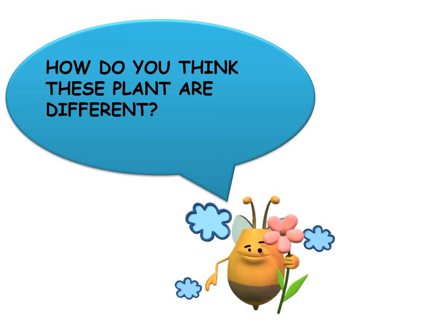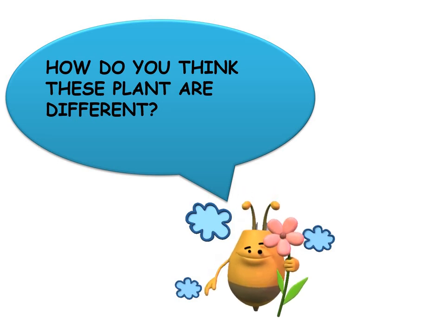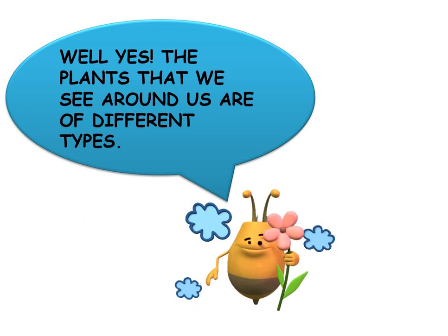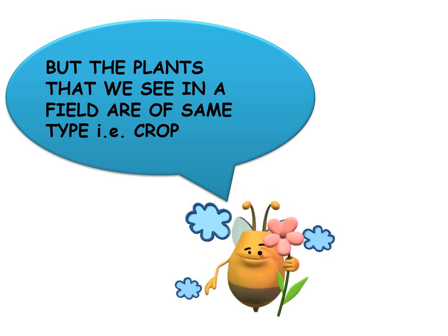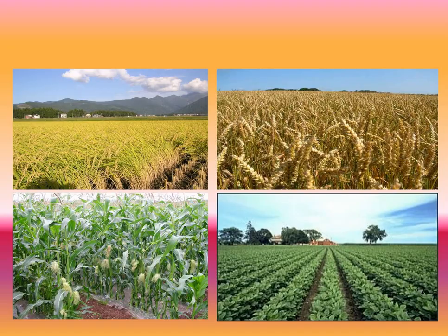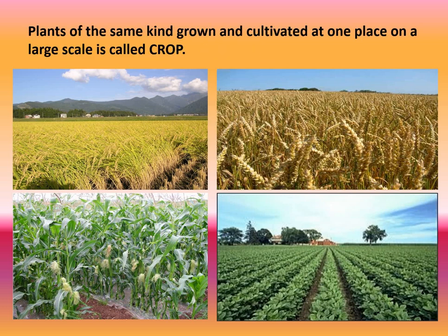Is there any difference between plants of a garden and plants of a farmer's field? The plants that we see in the garden are of different types, but the plants that we see in a field are of the same type, which is known as a crop. When plants of the same kind are grown and cultivated at one place on a large scale, it is called a crop.